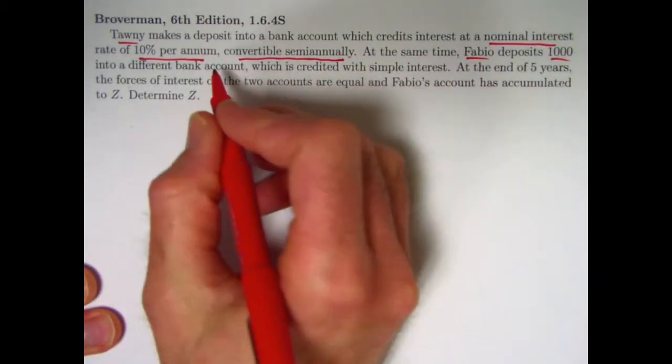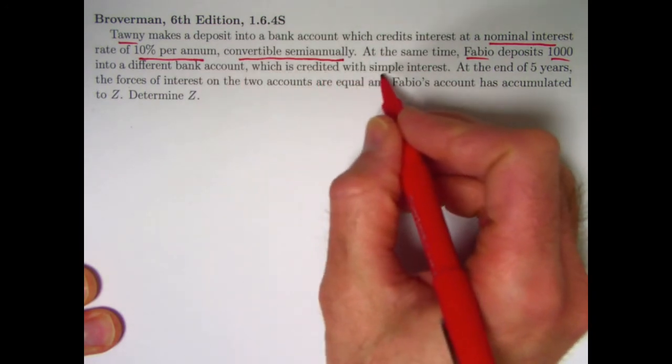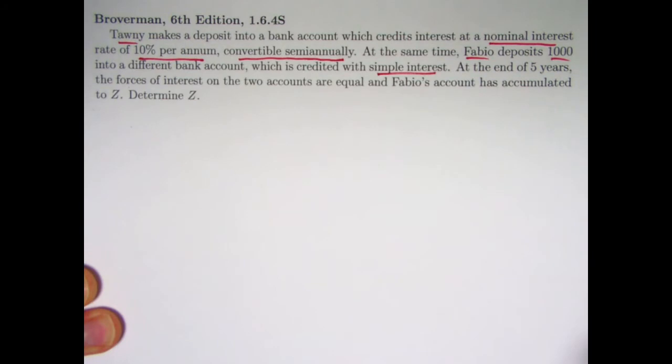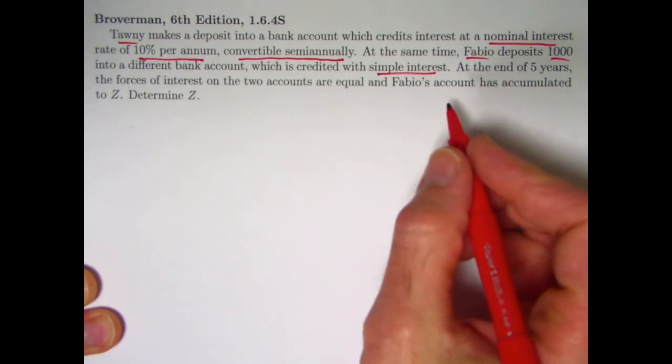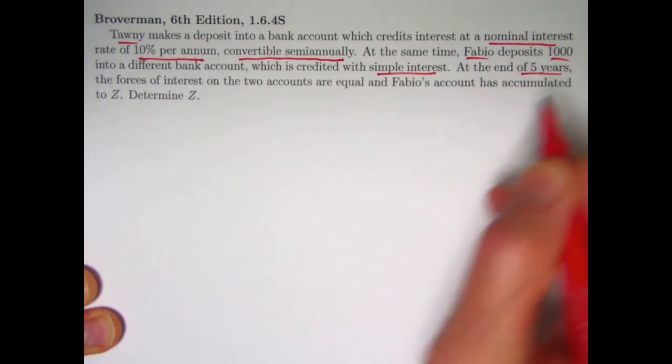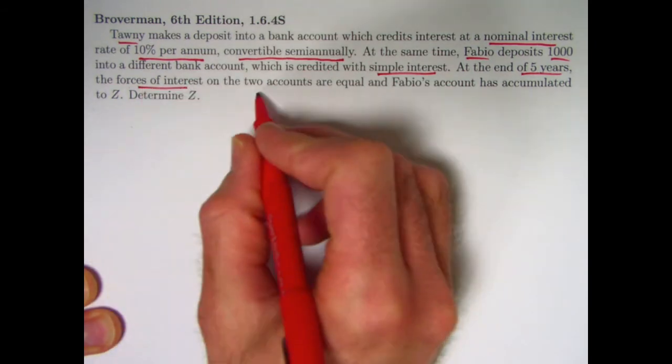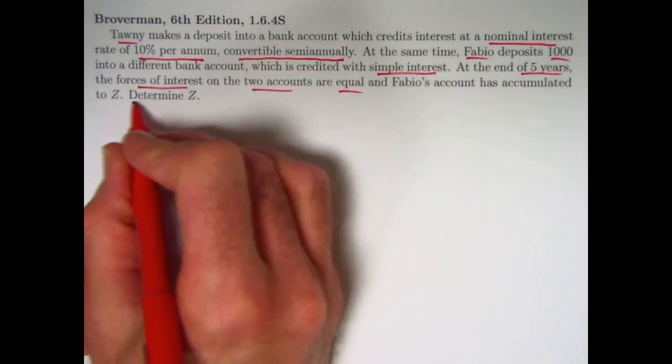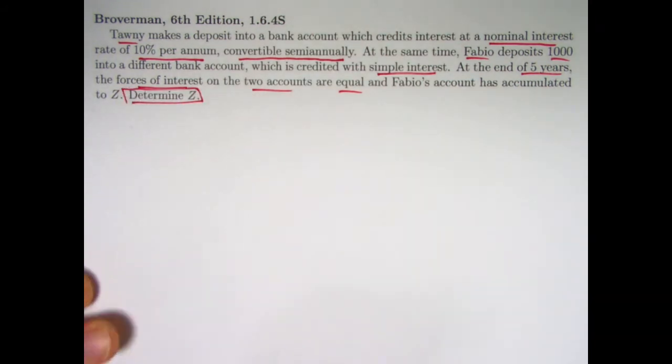Fabio deposits 1,000 to a different bank account which credits interest with simple interest. That's not typical, but it's what we'll go with here in this problem. At the end of five years, the forces of interest on the two accounts are equal, and Fabio's account has accumulated to z. Determine z, how much Fabio's account has accumulated to.